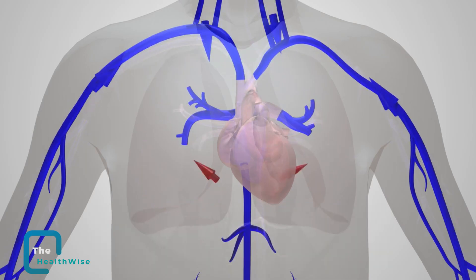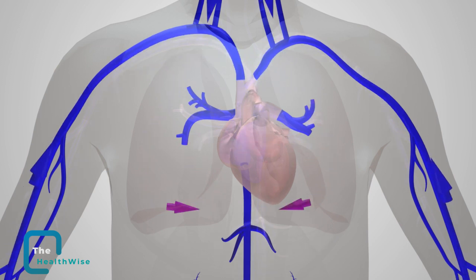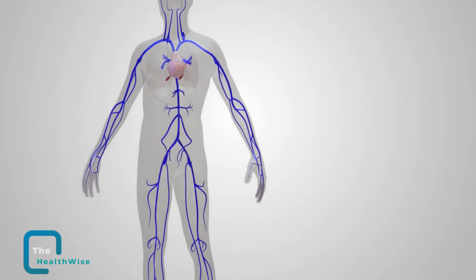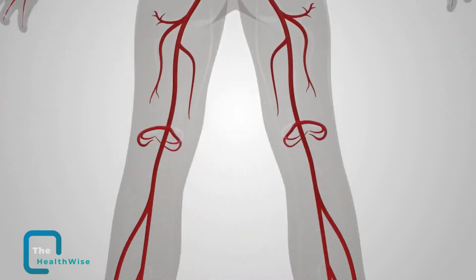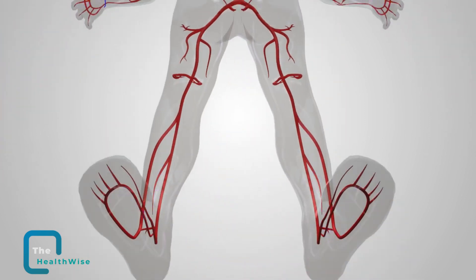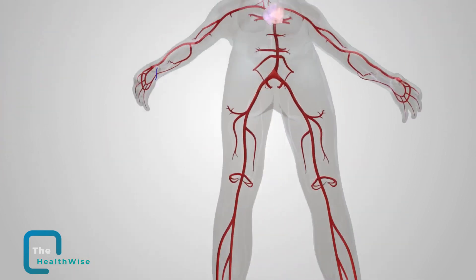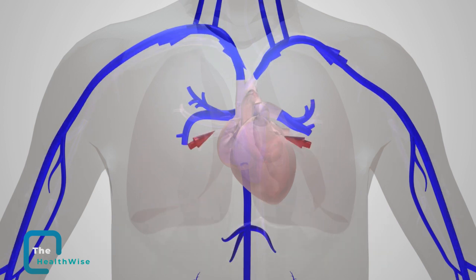Now, how do they form? Blood is usually pumped from your heart to the lungs, where it fetches oxygen. It goes back to the heart and is then pumped out again to every other part of the body, including the legs. From the legs, it comes back into the heart to complete the same cycle.